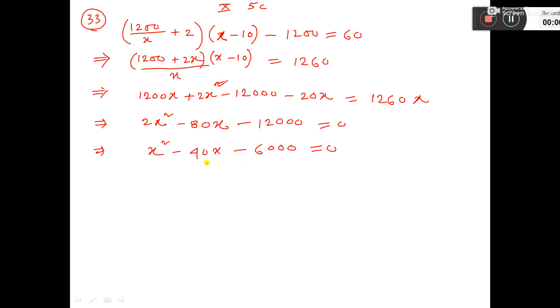Now you break down this 6000 to bring 40 here. So, you can break down x square minus 100x plus 60x minus 6000.